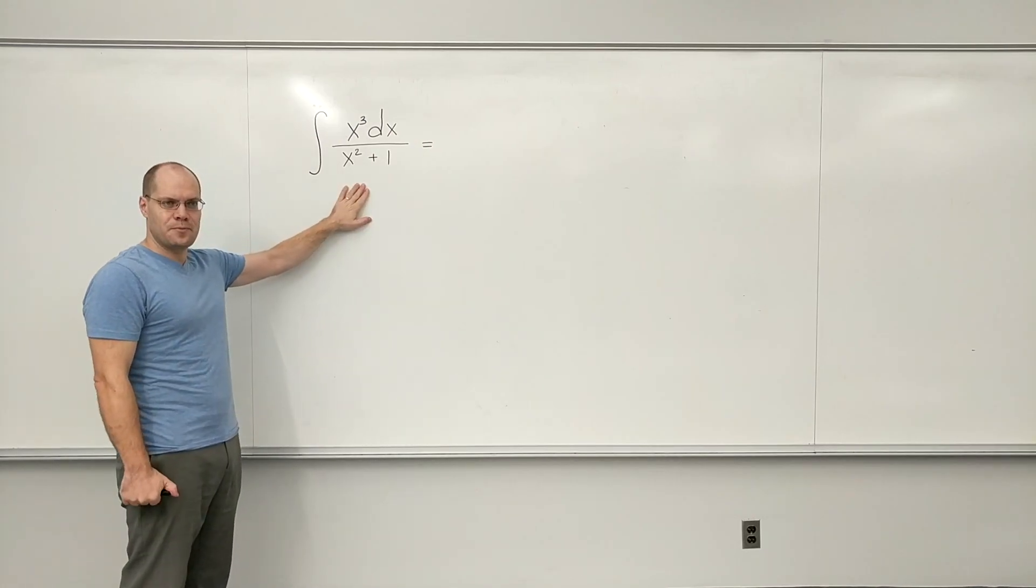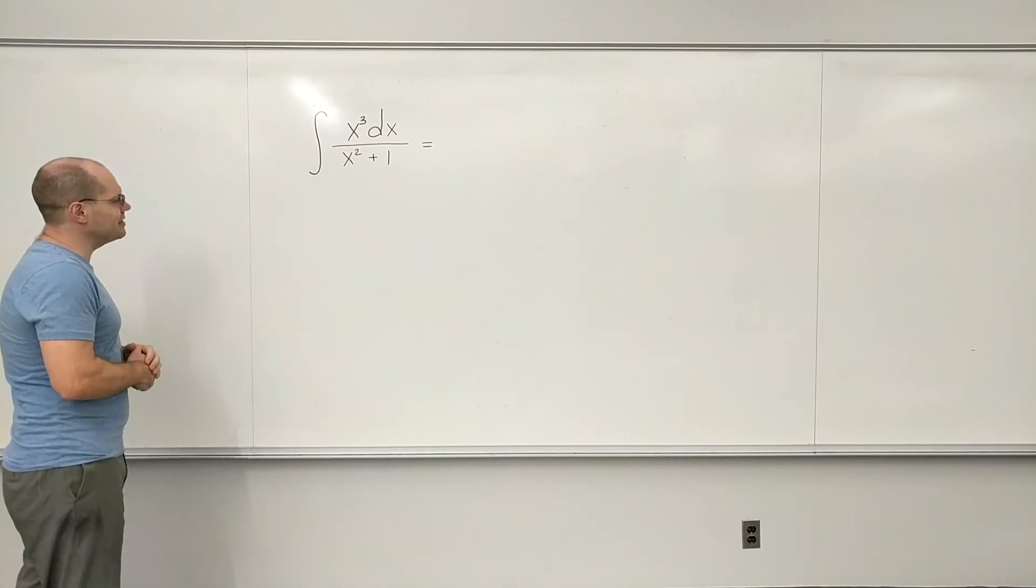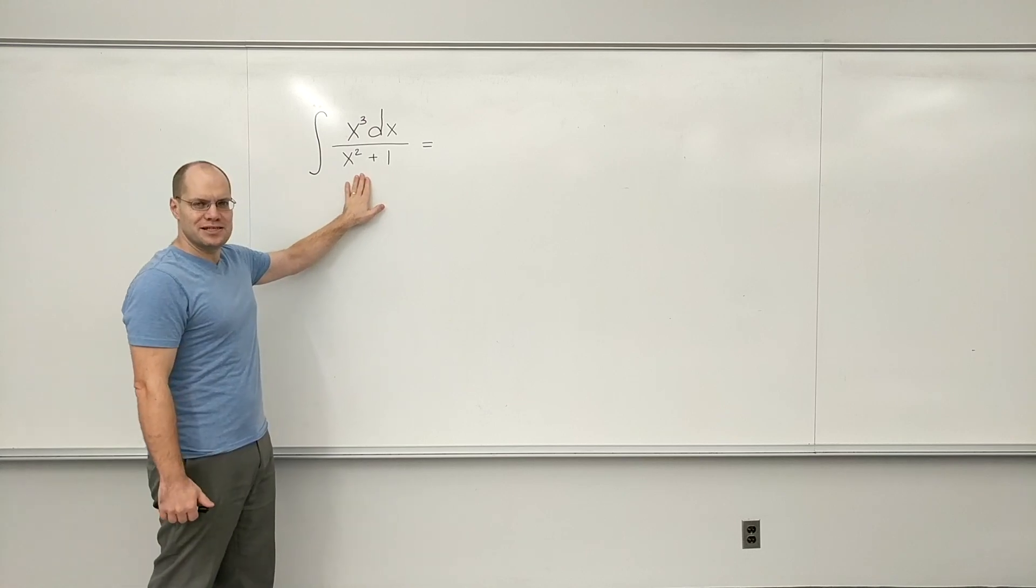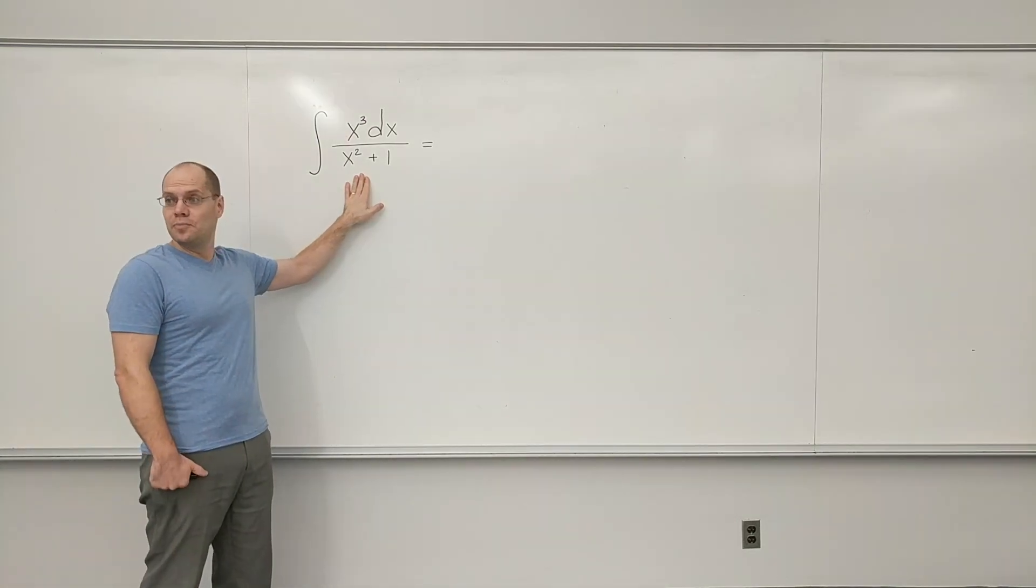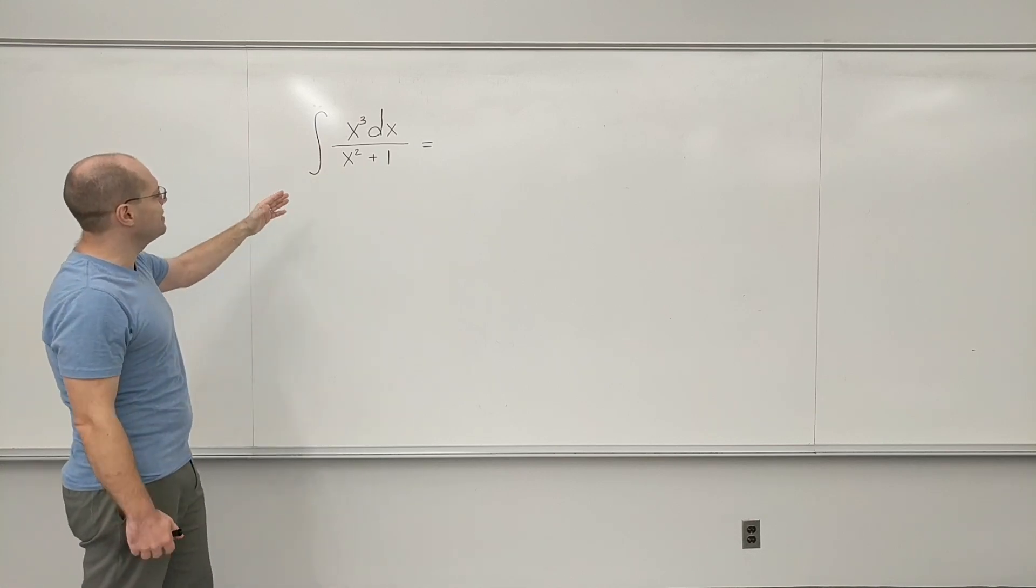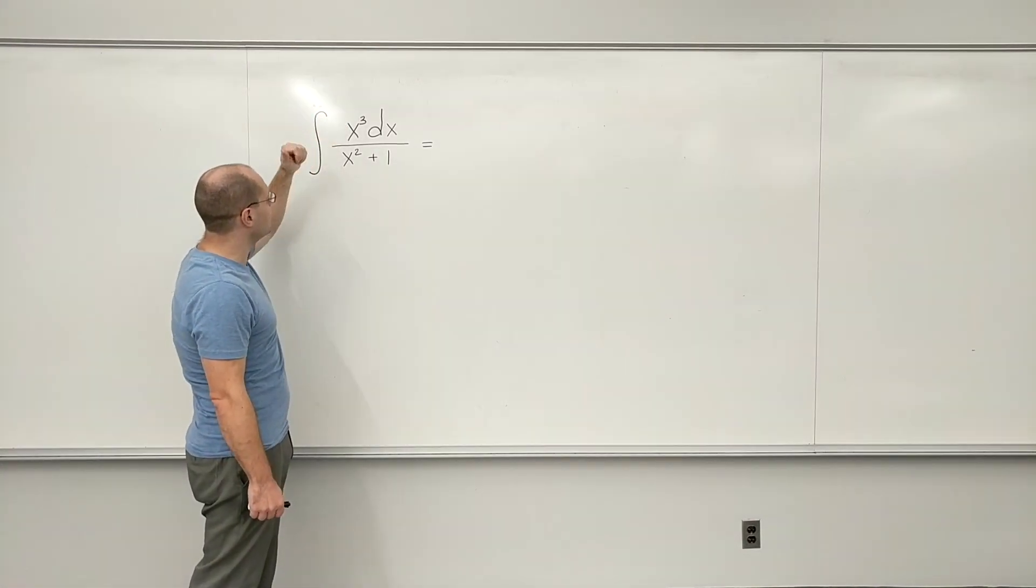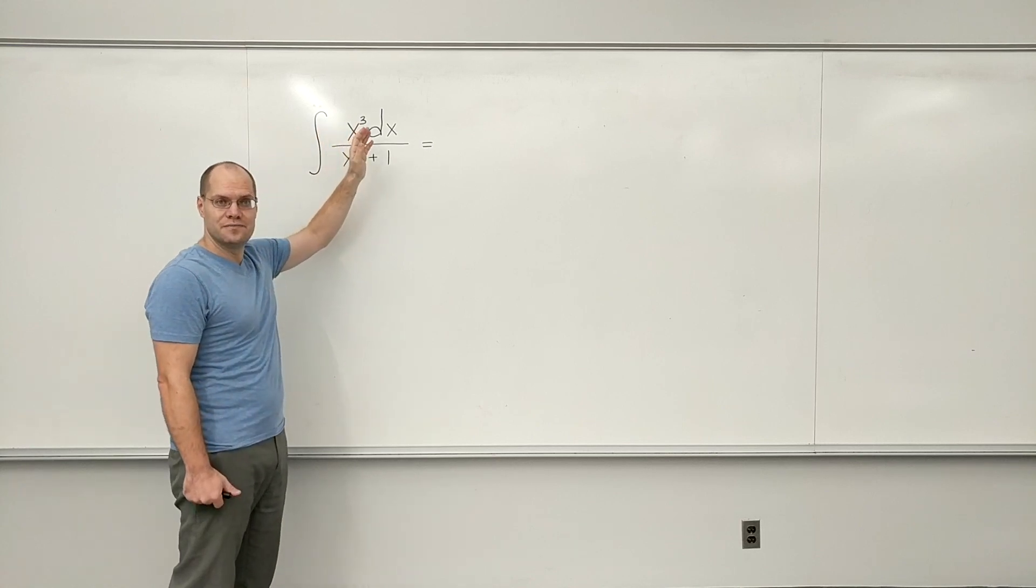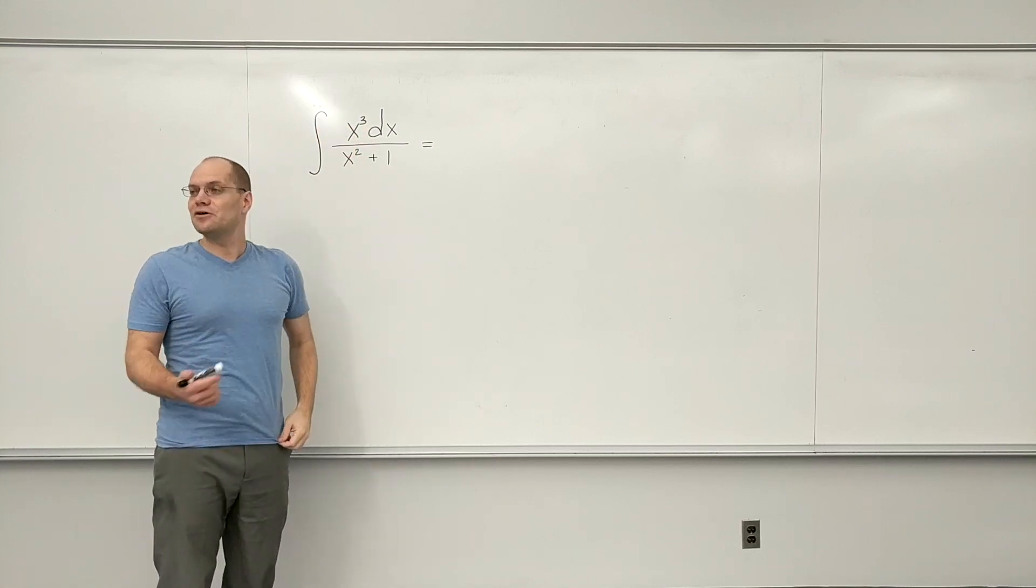So here's the integral we're doing right now. When I first look at it and see essentially 1 plus x squared in the denominator, I hope for an arctan. But here, I don't get it, because there is x cubed on top, and for arctan, I would just need to have 1, or something that can somehow give me 1.